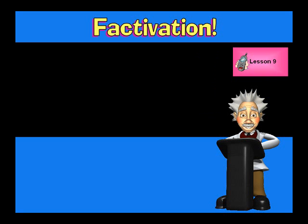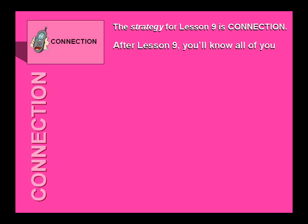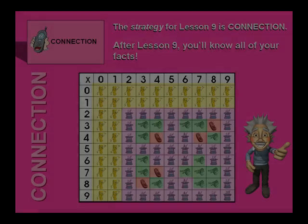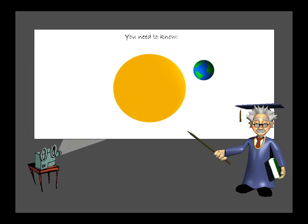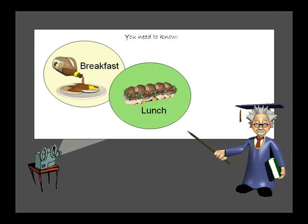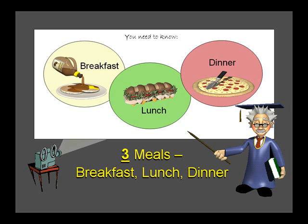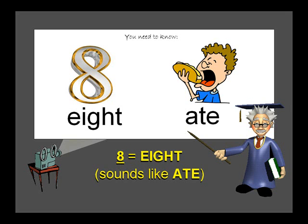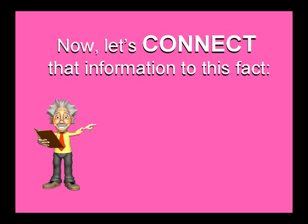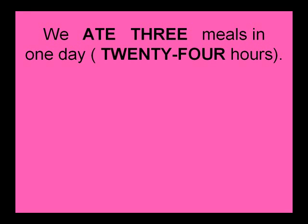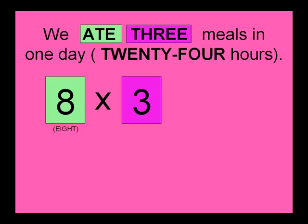The last group is the connection group and includes only Lesson 9. The strategy for Lesson 9 is connection. After Lesson 9, you'll know all of your facts. Here's a connection from Lesson 9: one day equals 24 hours. Three meals are breakfast, lunch, and dinner. The number eight sounds like 'ate,' as in ate a delicious meal. We ate three meals in one day, which is 24 hours. Eight, three, twenty-four.